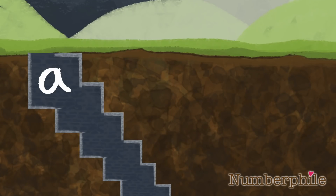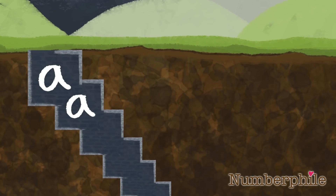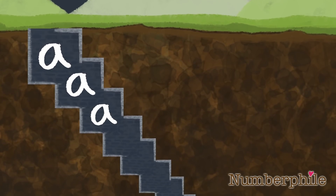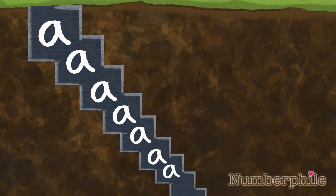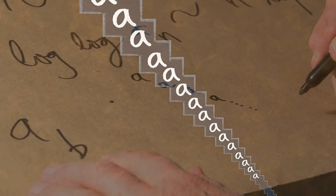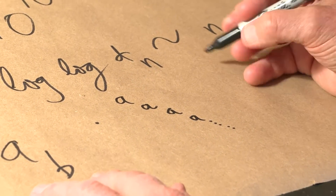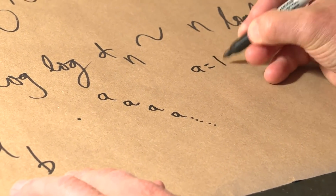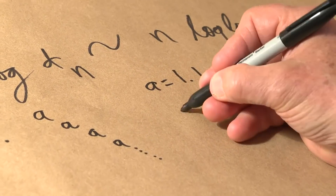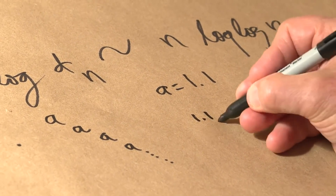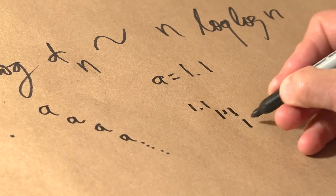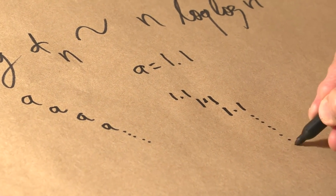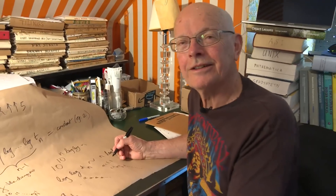What if you took a number and read it in base a, and read that in base a, and went all the way to infinity? In particular, I want to take a to be the number 1.1 — so 1.1 sub 1.1 sub 1.1, forever. You can have bases with decimal points.